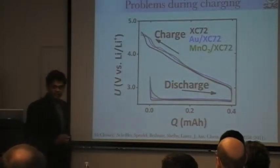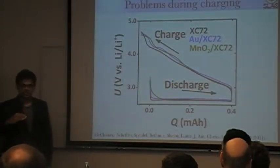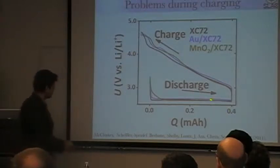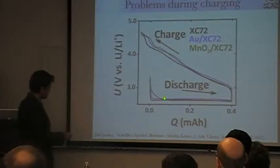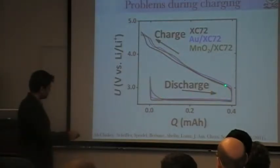I started out by saying the discharge and charging cycles are extremely efficient. So if that was the case, then we should essentially get a box curve with the discharge being at the discharge overpotential and charge being at the charging overpotential.